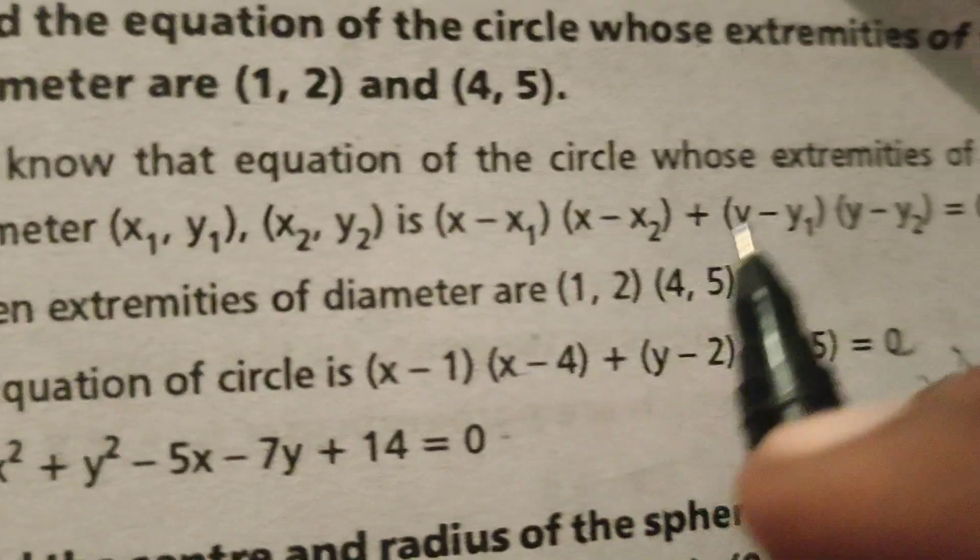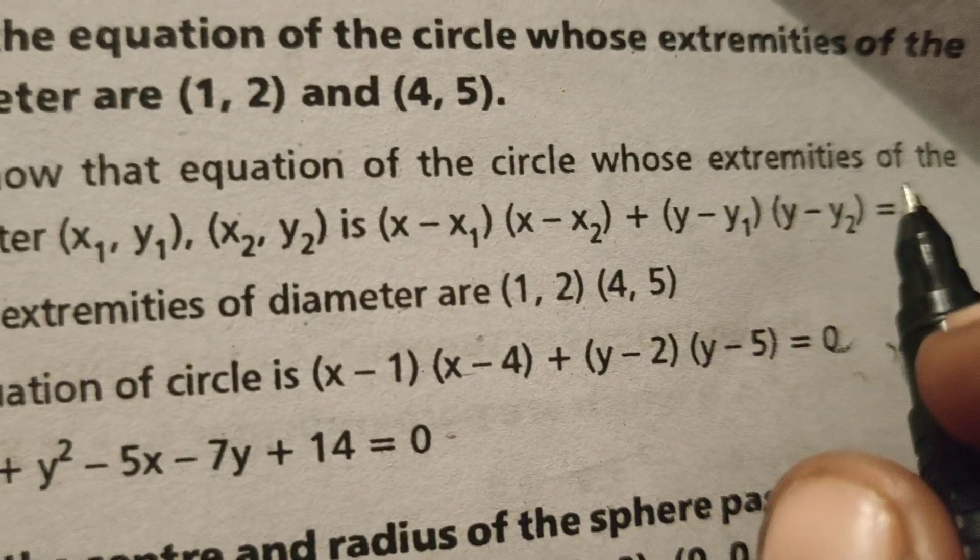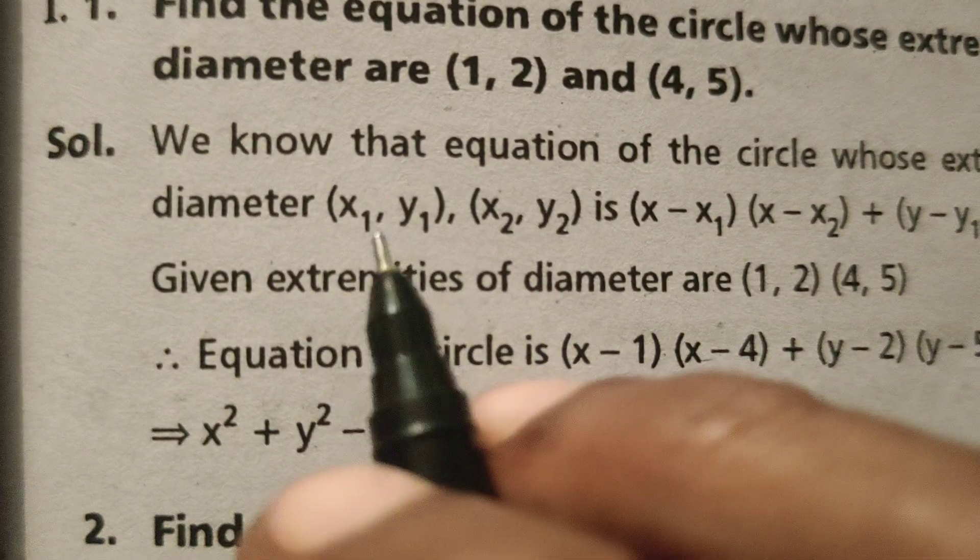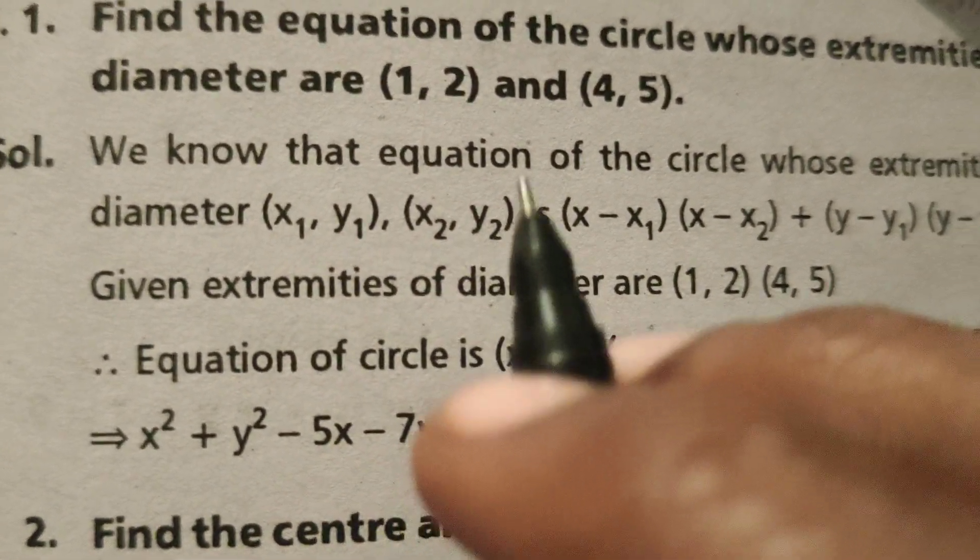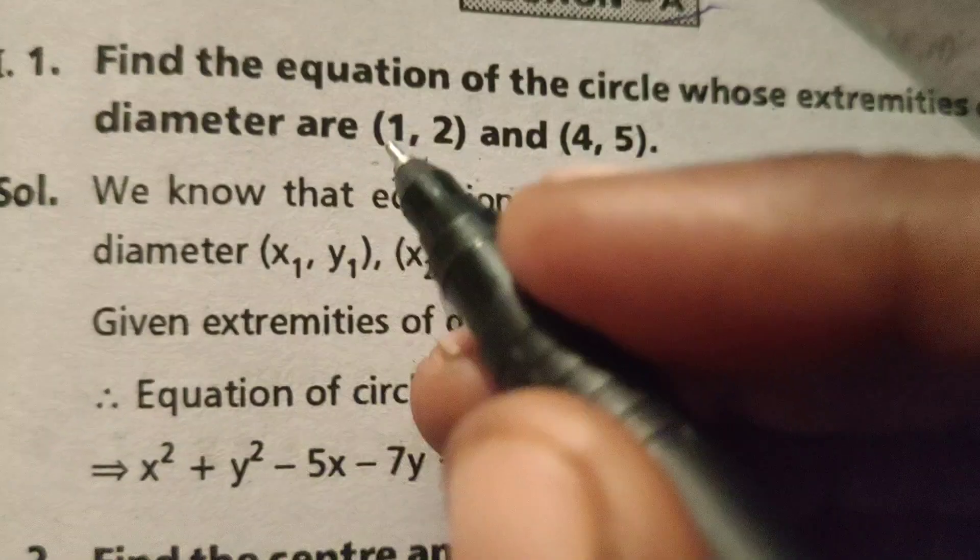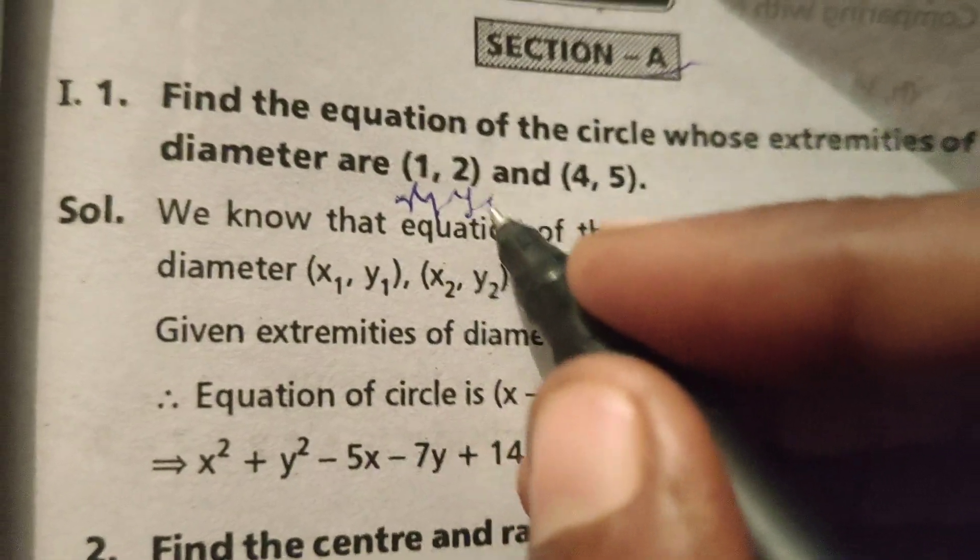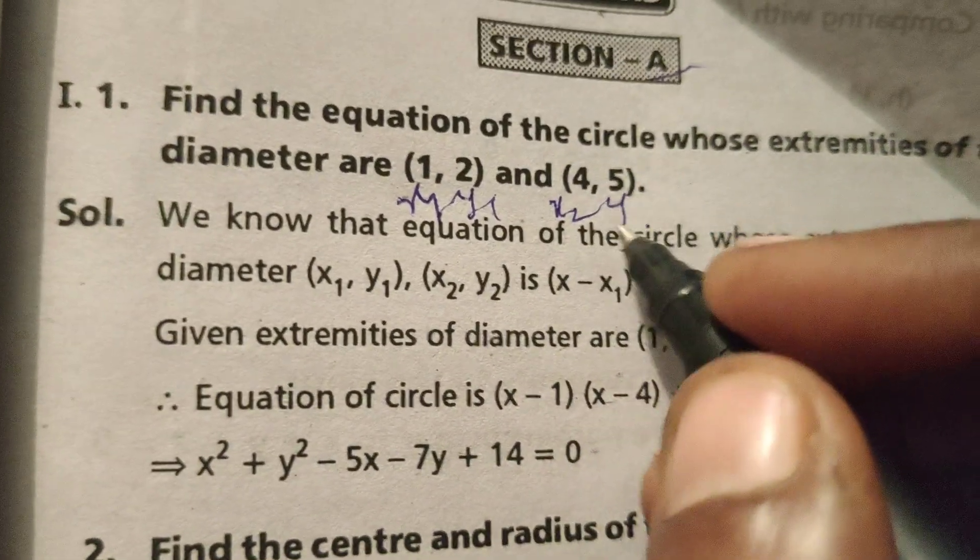We know that equation of the circle whose extremities of the diameter x₁, y₁, x₂, y₂. I mean here given points, this is x₁, y₁, x₂, y₂.